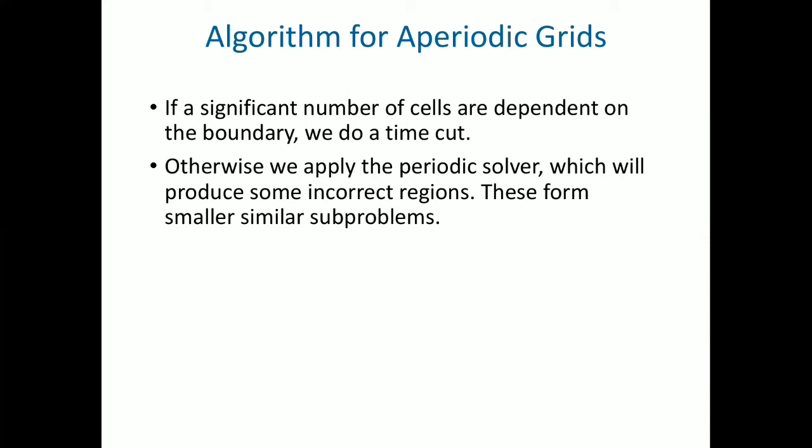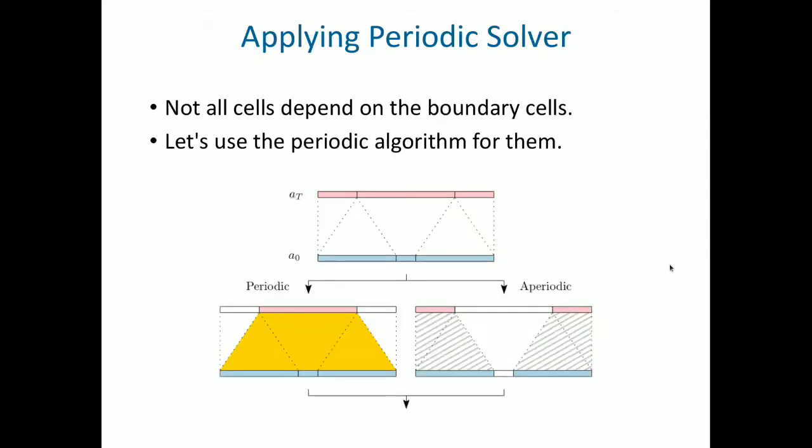So because they're not dependent on the boundary, the boundary conditions could be anything. We don't care about them. The regions that are dependent on the boundary left over from this will be subproblems. These will form similar subproblems to the original problem we were trying to solve, except they will be smaller. And these subproblems will be solved for recursively.